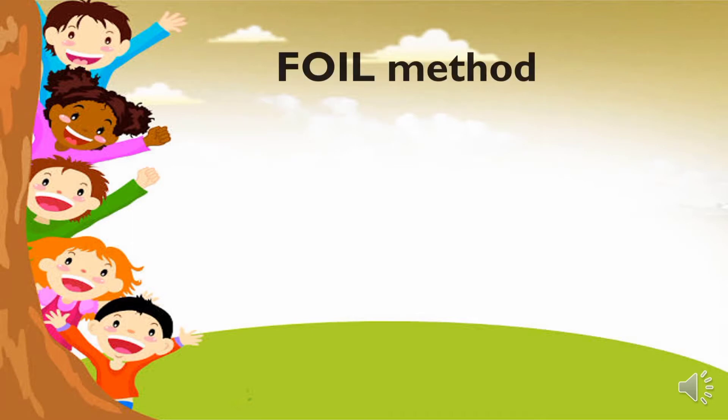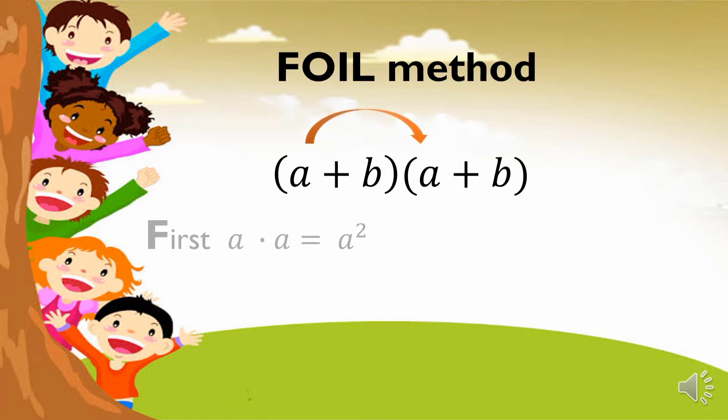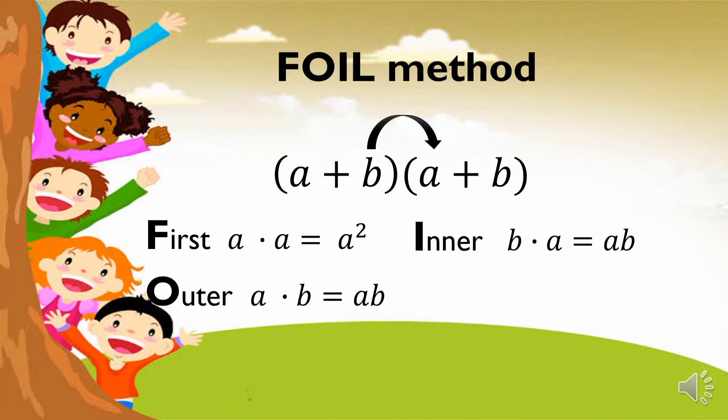One example here is the FOIL method. If we have here a given of a plus b times a plus b, we need to multiply the first terms of the two expressions, the outer area, the inner area, and the last terms of the two expressions.